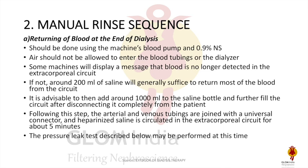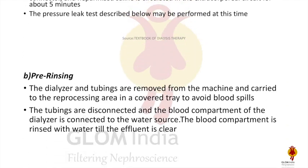This next step is optional but will increase dialyzer efficiency significantly. The arterial and venous tubing are joined with a universal connector and heparinized saline is circulated, allowing residual clots to be properly removed. A pressure leak test can also be performed at this stage.